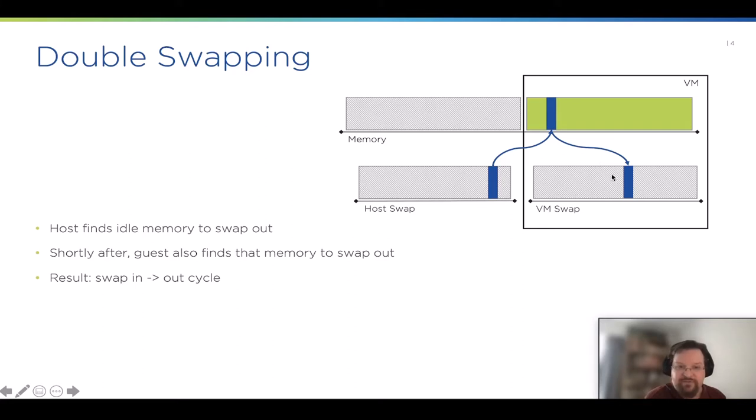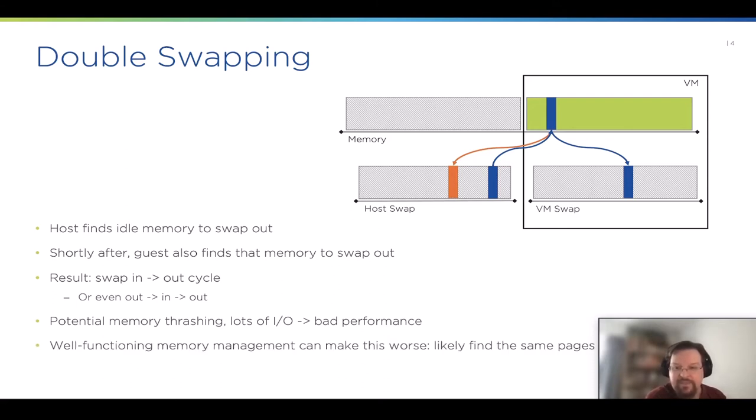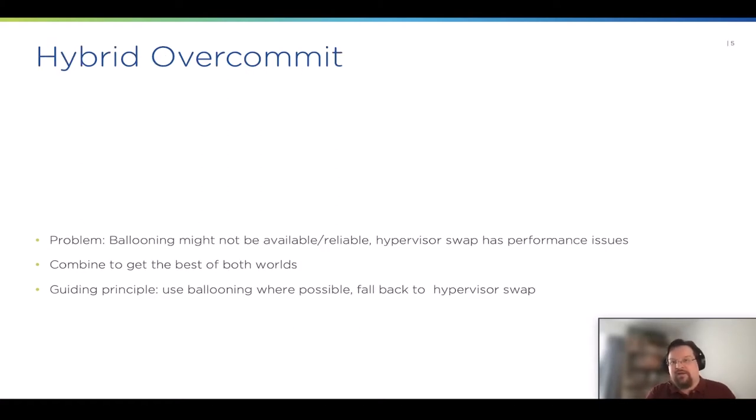Except now to swap this same page out, it first needs to swap it in just to swap it out again on VM swap. Even worse, if the VM is under memory pressure, chances are to swap this memory in, you first need to swap out some memory to swap in some memory to swap out some memory. You create a lot of additional I/O and can easily end up thrashing badly. The most insidious part is that the better your memory management system works, the more likely this is to happen because they will identify the same idle pages.